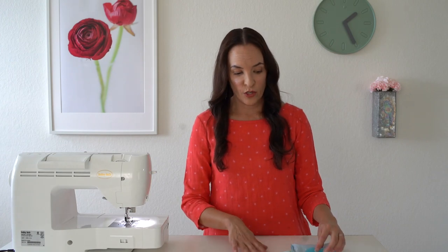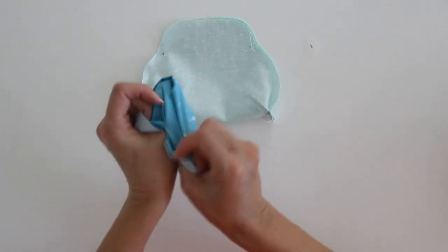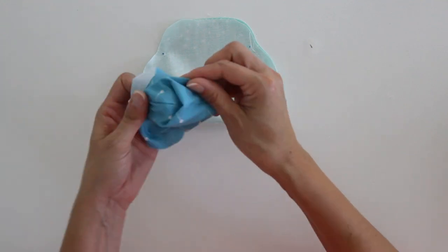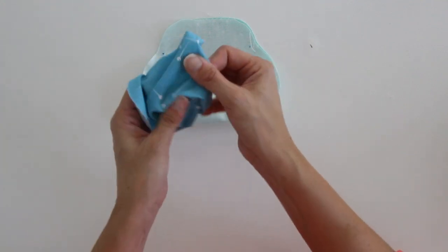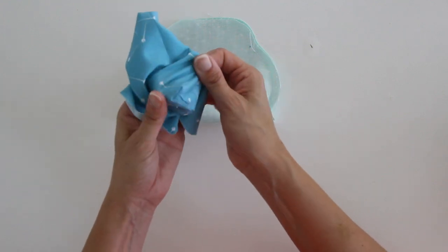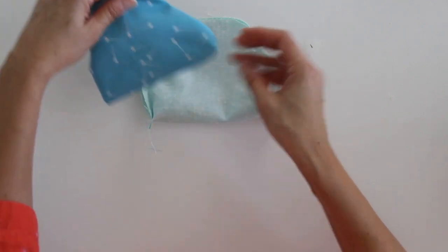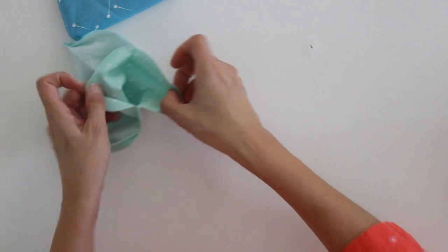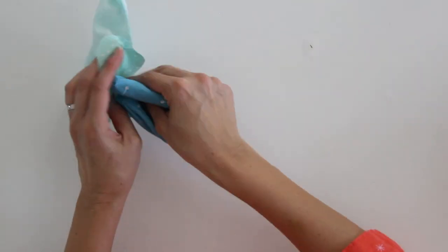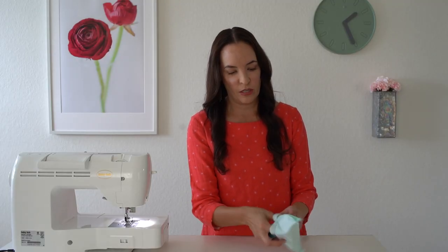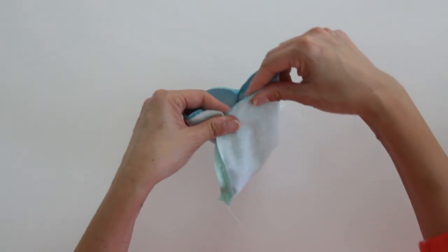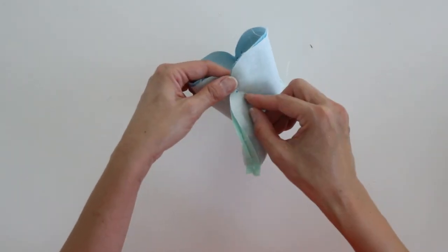The next step is to turn one of the pieces right side out. It doesn't really matter which one at this point that you're turning. And then you want to take the right side out piece, and you want to place it inside the wrong side out piece. And we're going to be matching those top edges.